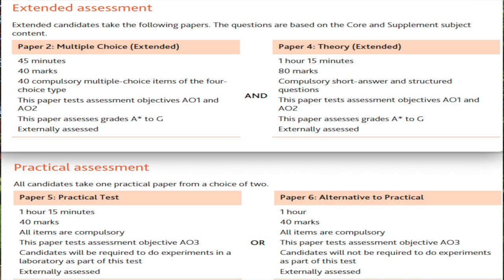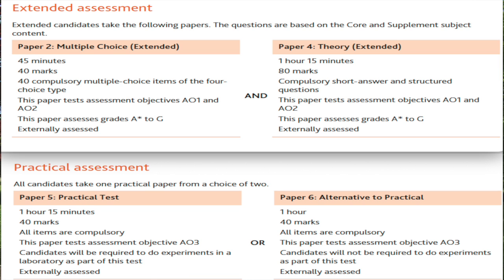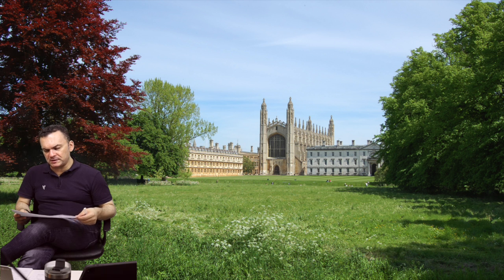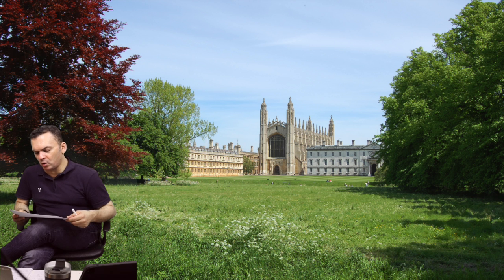For paper five or paper six, the time allowed is one hour in the case of paper six, and one hour 15 minutes in the case of paper five, because paper five has a real practical while paper six is alternative to practical. The marks allowed for both is 40 marks.